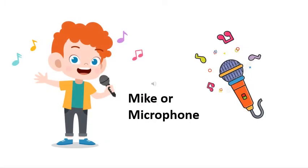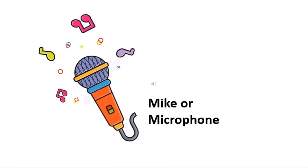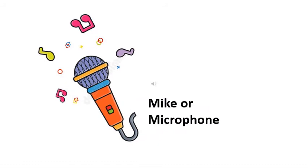So children, can you identify what this boy is doing? Yes, this boy is singing a song. And what is he using? What is there in his hand — do you identify that? It is a mic or microphone. It is used to amplify the voice.